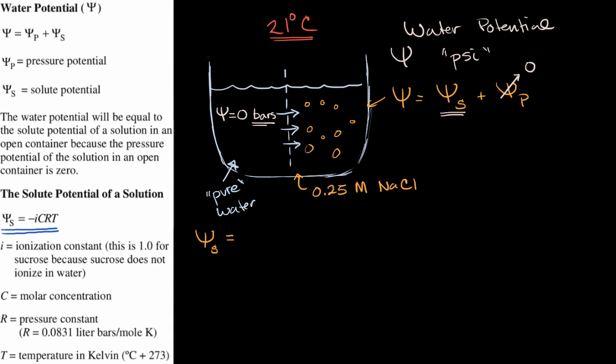It tells us that our solute potential is going to be equal to negative i, and I'll talk about what that is in a second, times our molar concentration C, times our pressure constant R. Now, they're calling it the pressure constant in this context, but it's actually the same R that we see in the ideal gas law, times the temperature in Kelvin, times T.